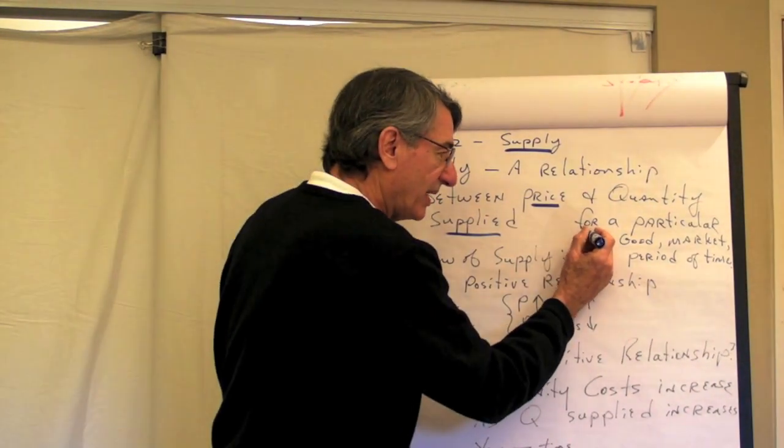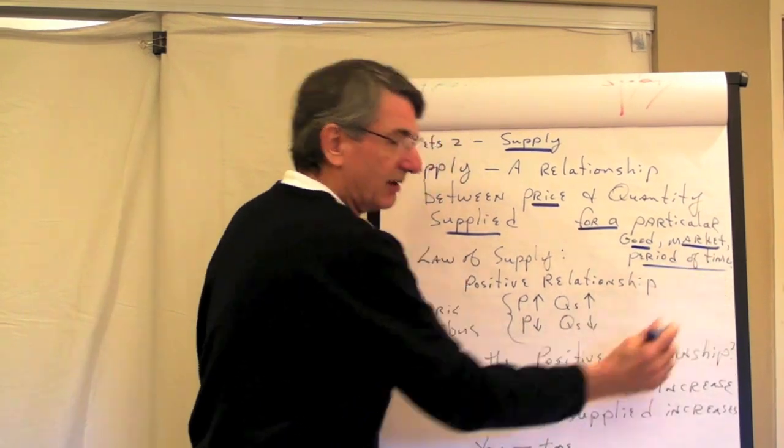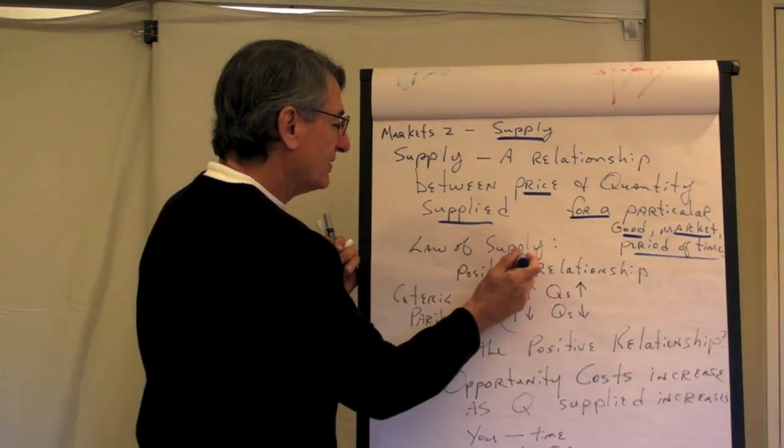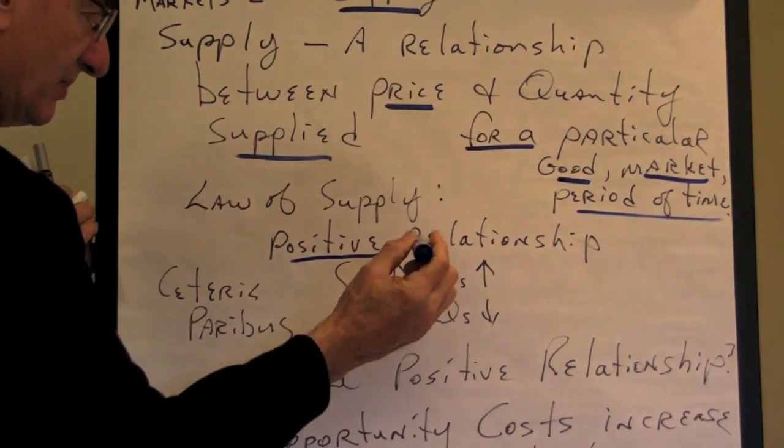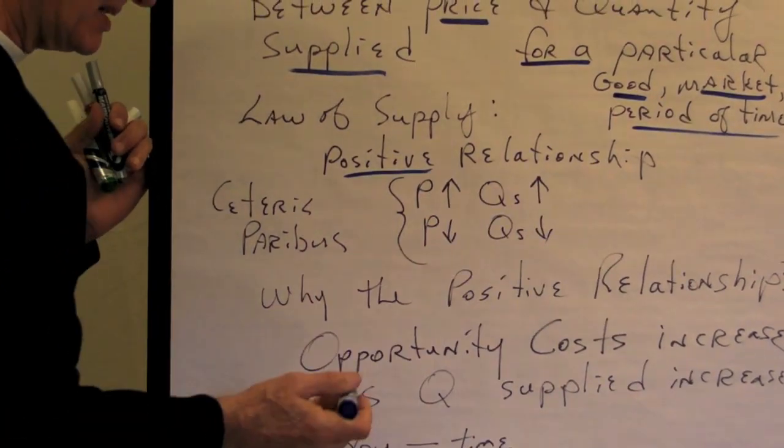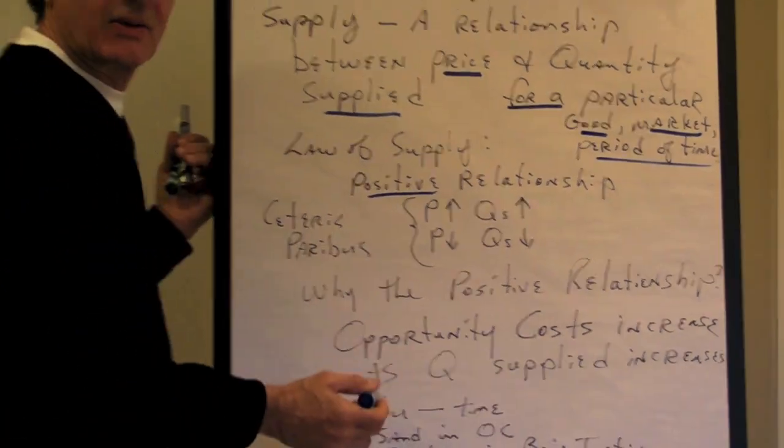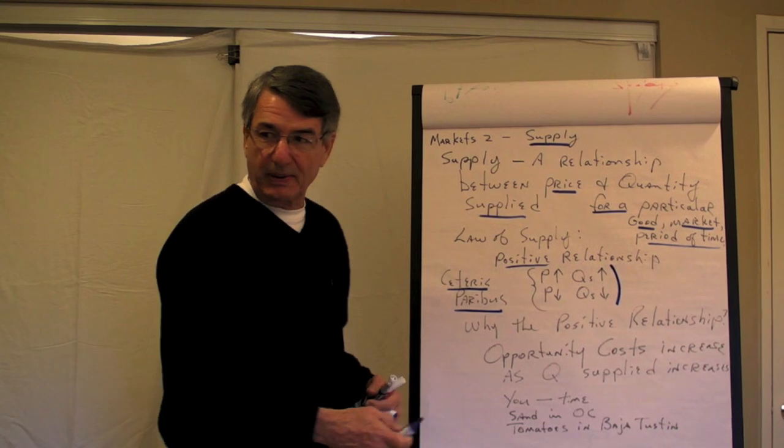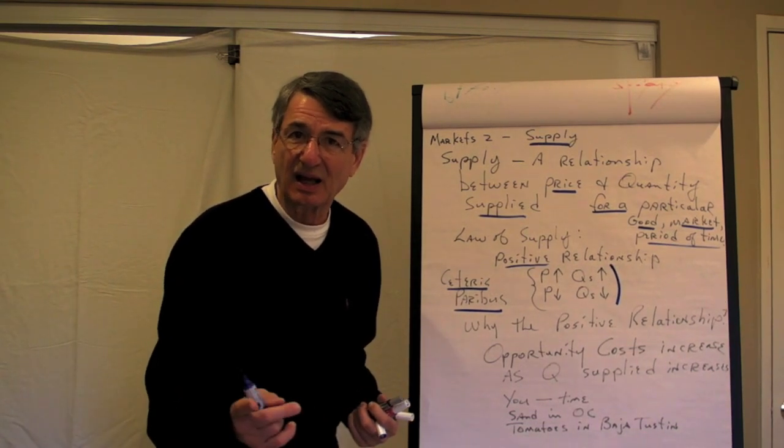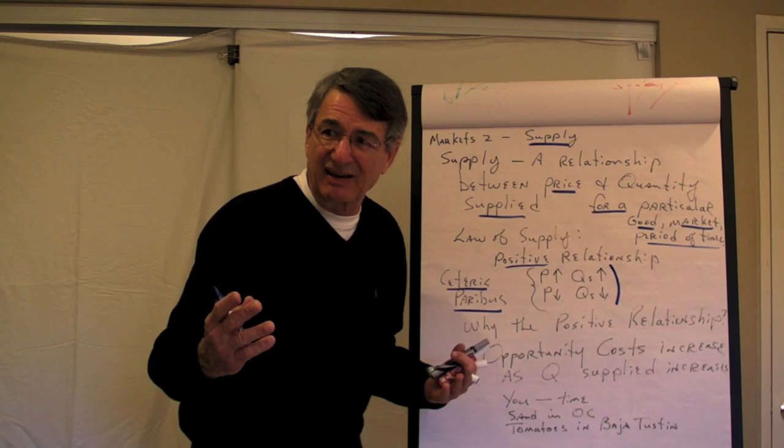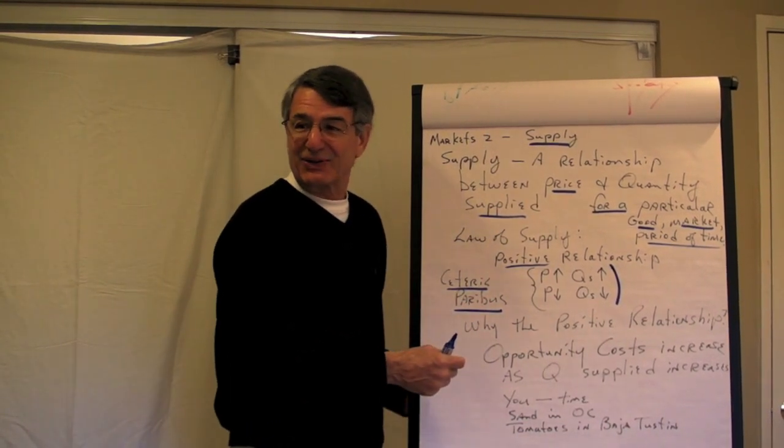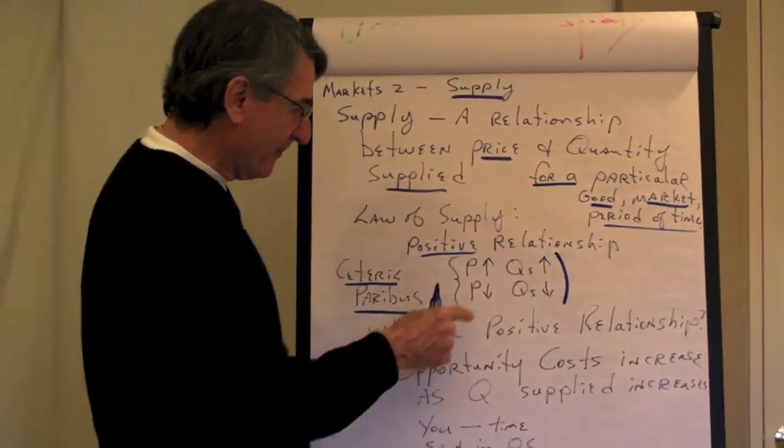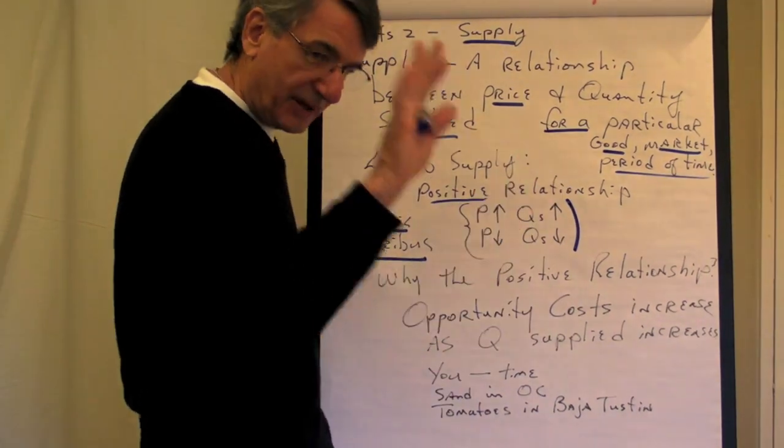And when we talk about quantity supplied, we're talking about for a particular good in a particular market during a particular period of time. So we have to specify what is the good, what is the market, what is the period of time. Now, the law of supply says that this relationship between price and quantity supplied is positive. That means that when the price goes up, the quantity supplied goes up. And if the price goes down, the quantity supplied will go down. This naturally assumes ceteris paribus, which you people know to be Latin for other things constant. Everything besides price is held constant.